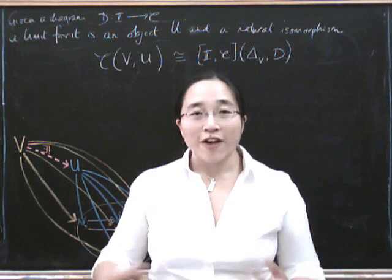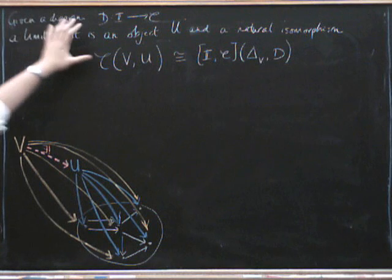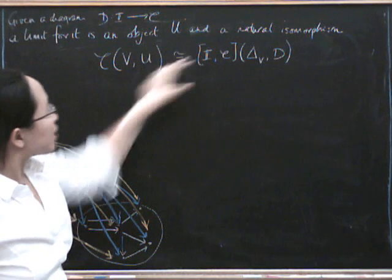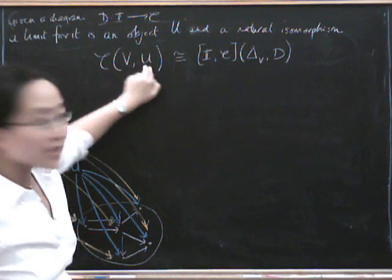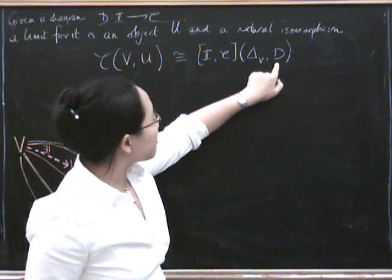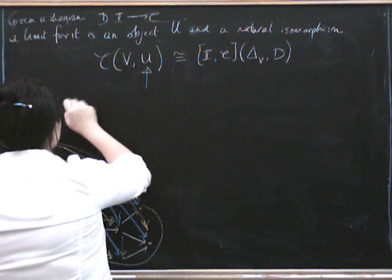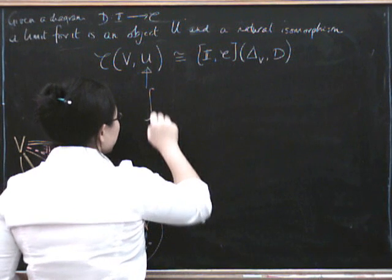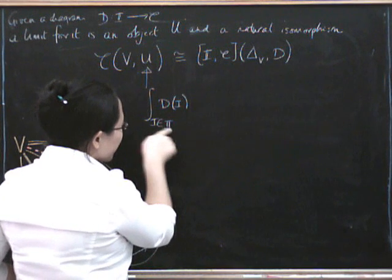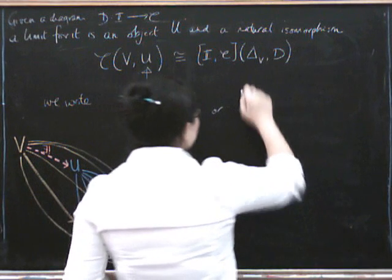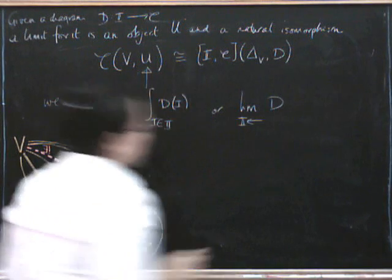Now we've seen the very formal way of saying what a limit is — it's this isomorphism. Given a diagram of shape I, a limit for it is an object U together with a natural isomorphism. We'll sometimes write the limit using this integral sign, saying we're taking the limit over all the objects in I of this functor. We also sometimes write 'lim' with an arrow going backwards towards category I, showing we're taking a limit of the functor D.